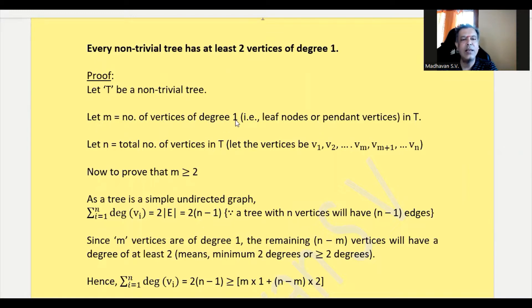That is, the leaf nodes or pendant vertices in the tree T. Let n be the total number of vertices in the tree, and let us consider those vertices as v₁, v₂, and so on up to vₘ, and then vₘ₊₁ and so on up to vₙ.